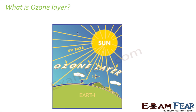Now we all know that the sun emits many different types of radiations — for example, visible light, infrared radiation, ultraviolet radiation, microwaves, radio waves, etc. And all of them together form the electromagnetic spectrum.